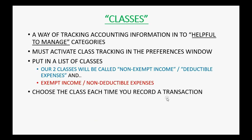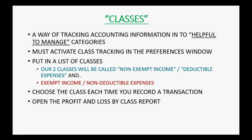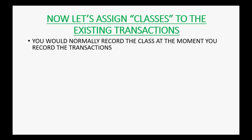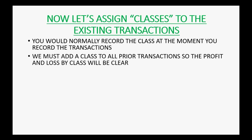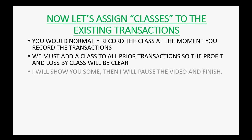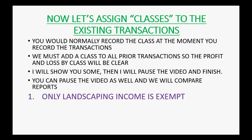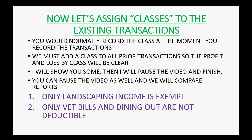When making a transaction you can choose the class, then open the profit and loss by class to see the estimated taxable net income to compare against the tax rate schedules for sending in estimated taxes. Now let's assign classes to existing transactions. You would normally record the class at the moment you record the transaction, but we must add a class to all prior transactions so the profit and loss by class will be clear. For this example, assume only landscaping income is exempt, and only vet bills and dining out are non-deductible.